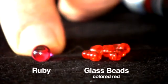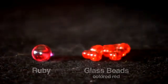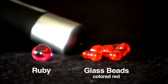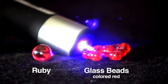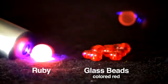Here I have a tiny piece of ruby and some red colored glass beads. When I shine the blue light on the glass beads, nothing much happens, but shine it on the ruby and it glows red. Unlike the glow-in-the-dark ball, the light appears immediately and when I shut off the blue light, it disappears.